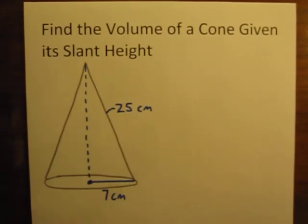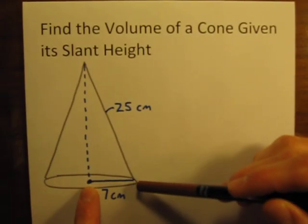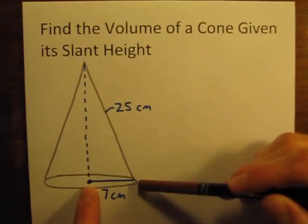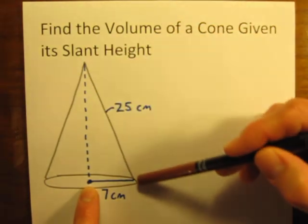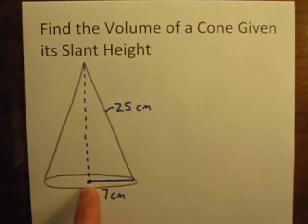It's time to calculate the volume of another cone and I've got a problem here for you. We've got here that the radius of this cone is 7 cm and the length of this side of the cone is 25 cm. We want to calculate the volume.